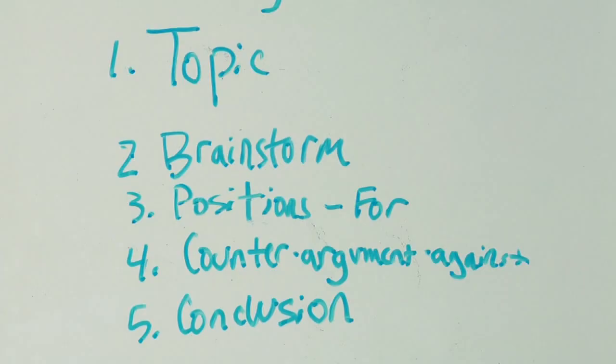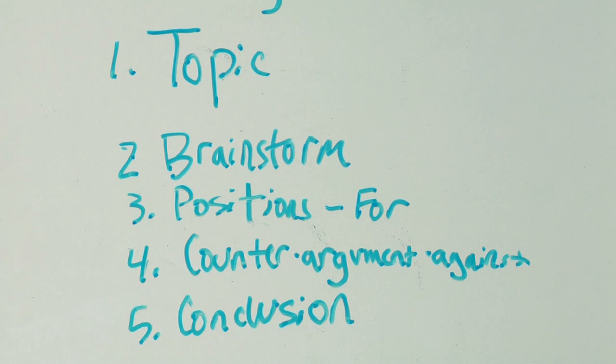So you're going to create two arguments: one for their position, and then rebuttals to the against point of view. Take these ideas you've brainstormed and turn them into paragraph form — an introductory statement like 'I believe kids shouldn't have homework,' followed by the reasons why. The next paragraph covers the other side's arguments for homework and the reasons they're wrong. Then a concluding statement where students summarize why their side is right.